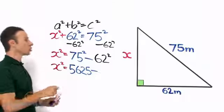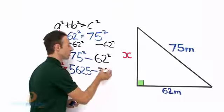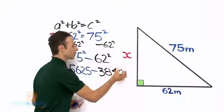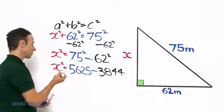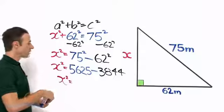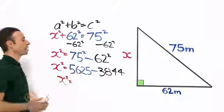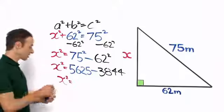Take away 62 all squared, let me check that, that is 3844, 3844. Put that into your calculator and we will end up with x squared equals 5625 take away 3844 will give us 1781, so let us write that in, 1781.